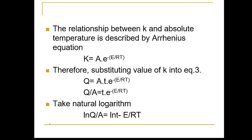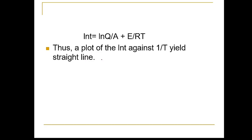The relationship between k and absolute temperature is described by Arrhenius equation: k equals Ae^(-E/RT). Substituting the value of k into equation 3 gives Q equals At·e^(-E/RT). If we put A aside, Q/A equals t·e^(-E/RT). On taking natural logarithm: ln(Q/A) equals ln(t) - E/RT. Therefore, ln(t) equals ln(Q/A) + E/RT. Thus, a plot of ln(t) against 1/T yields a straight line.